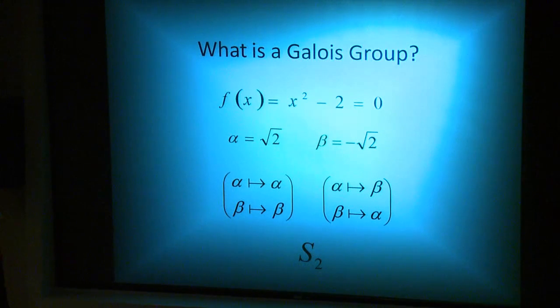What is a Galois group? A Galois group is a set of permutations of the solutions of any given polynomial. To get a better idea of what a Galois group is, let's look at how Galois perceived it.